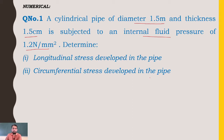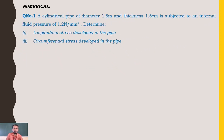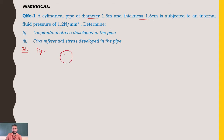Let us begin with the solution. We make a rough figure for reference — a cylindrical pipe where length is not mentioned. The given data: diameter of pipe D equals 1.5 meters, thickness of pipe T equals 1.5 centimeters, which is 1.5 into 10 raised to minus 2 meters. Internal fluid pressure P equals 1.2 Newton per mm square.